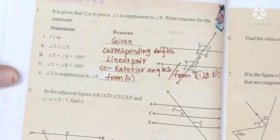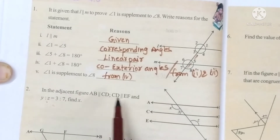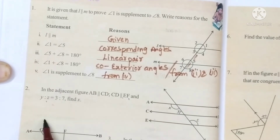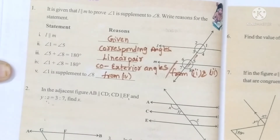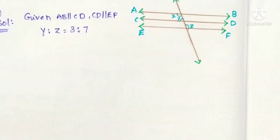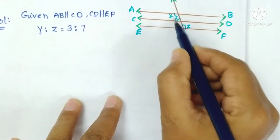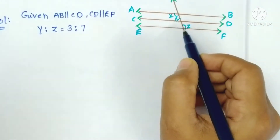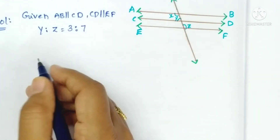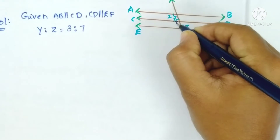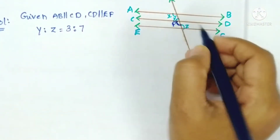Now the second problem: in the adjacent figure, AB is parallel to CD, CD is parallel to EF, and y to z equals 3 to 7. Find x. First, x and y are supplementary — they are co-interior angles. Let the angle at the intersection be p; then y and p are also supplementary.